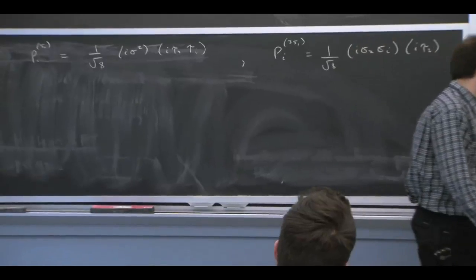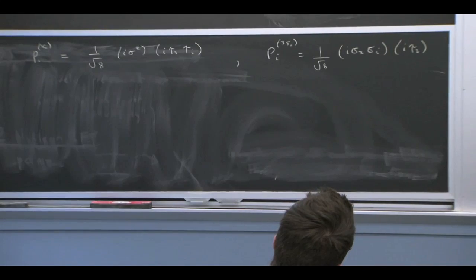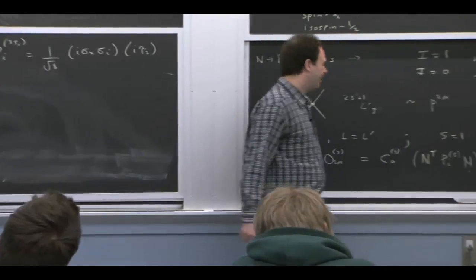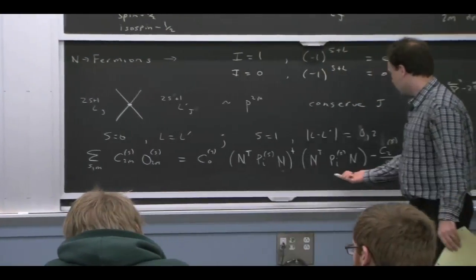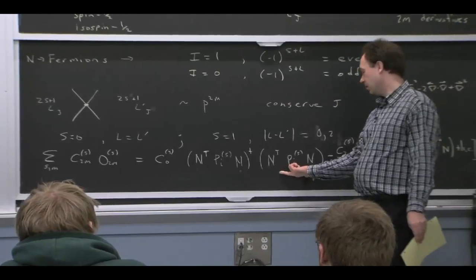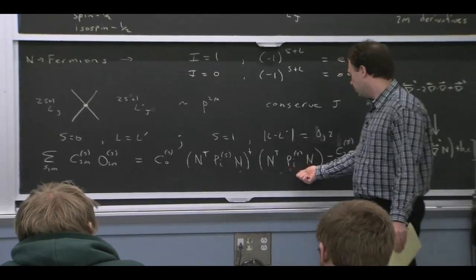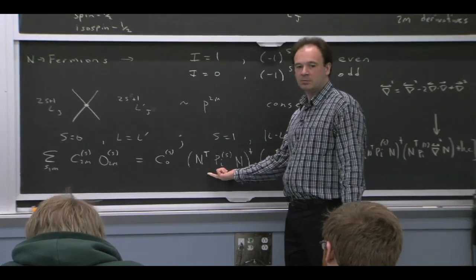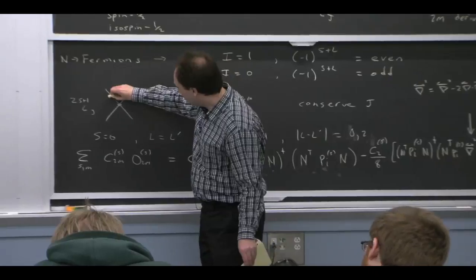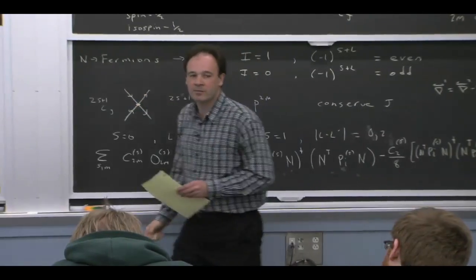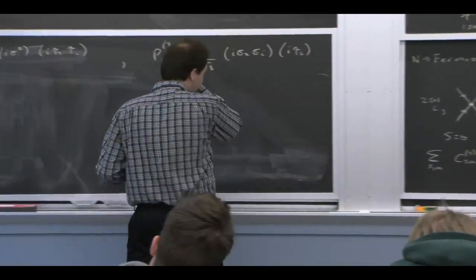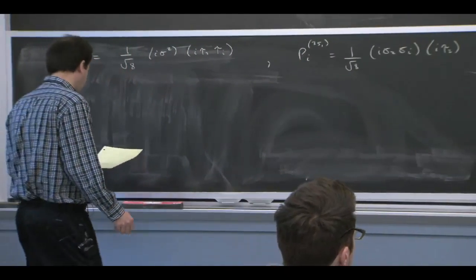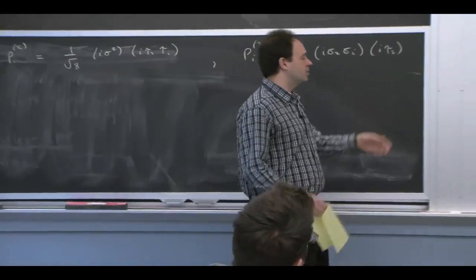And the I tau 2 and I sigma 2 are just because of the way I wrote the operator. I wrote it, instead of writing n dagger n, I wrote n transpose n, all dagger. And that means basically you should think about the way this operator works, is it annihilates two nucleons in a particular spin wave, or particular spin, isospin channel, and then creates them again. OK? So annihilate, create. So I just put the two fields that are doing the annihilating together and the two fields that are doing the creating together. And that's nice, because you're annihilating them in a particular channel.